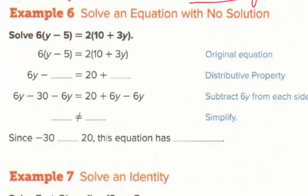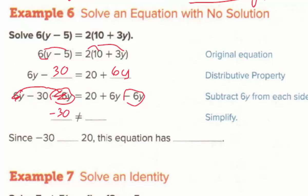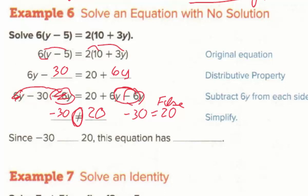In example 6, we distribute on both sides: the left gives 6y − 30, and the right gives 20 + 6y. Subtracting 6y from both sides cancels the y terms, leaving −30 on the left and 20 on the right. Since −30 does not equal 20, this statement is false, so this equation has no solution.